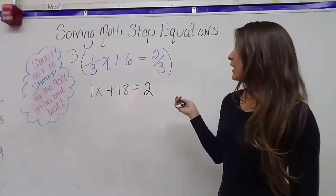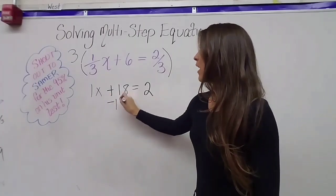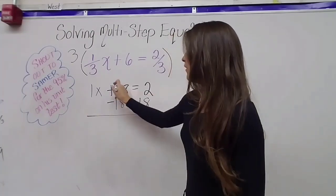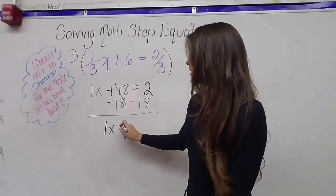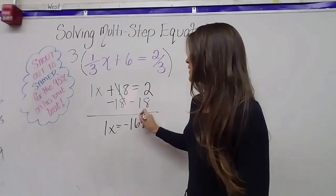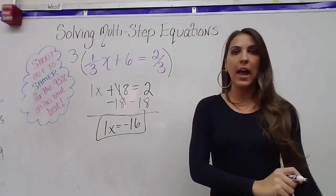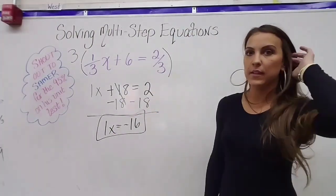One x plus 18 equals two. I'm going to subtract 18 on both sides. And that's going to leave me with one x, or just x, equals negative 16. So there is my solution. x is equal to negative 16 in this problem.